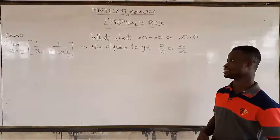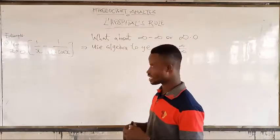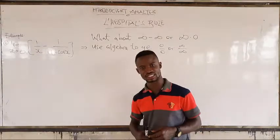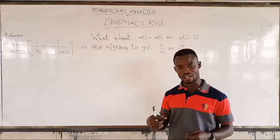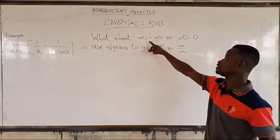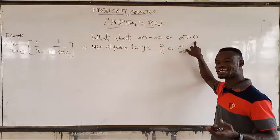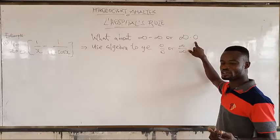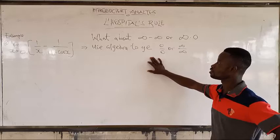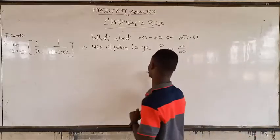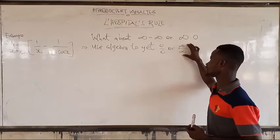Welcome to this video. In this video, we are going to look at the case whereby when you do the substitution of the limit, you are not going to get 0 over 0, neither infinity over infinity, but infinity minus infinity or infinity times 0. When such happens, you use algebra to get 0 over 0 or infinity over infinity.